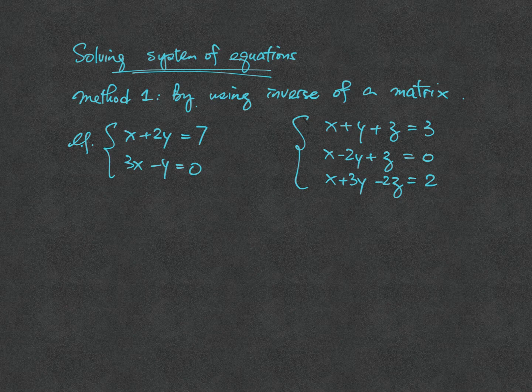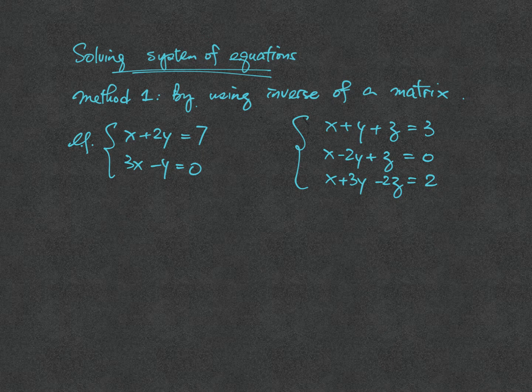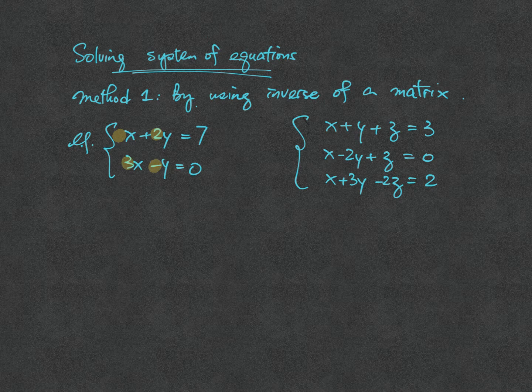For example, the one on the left hand side: x plus 2y equal to 7 and 3x minus y equal to 0. If we look at the coefficients of the equations, we have 1x, 2y, 3x and minus 1y.